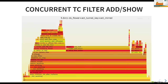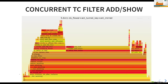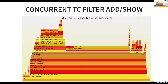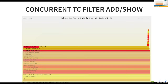Here's a flame graph to illustrate the problem. On the vertical axis is the call stack — caller on the bottom, callee on the top. Horizontal width represents CPU time sampled by the profiler. We can see flower_change calls flower hardware offload replace filter, which calls TC setup_flow_action. Zooming in, TC setup_flow_action is almost entirely spinning on the RTNL mutex.